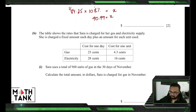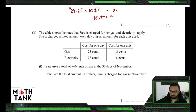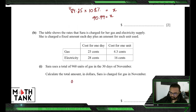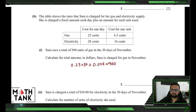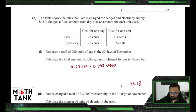The table shows the rates that Sara is charged for gas and electricity supply. She's charged a fixed amount each day plus a charge for each unit used. Sara uses a total of 960 units of gas in 30 days of November. Calculate the total amount in dollars: 0.23 multiplied by 30 for the days, plus 0.043 for 960 units, giving $48.18.